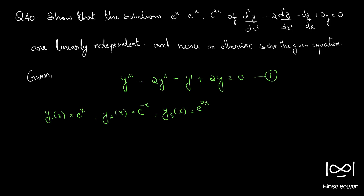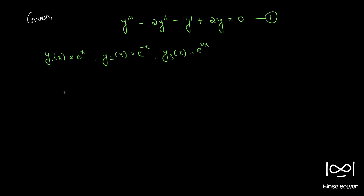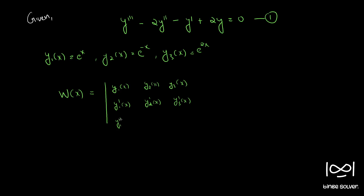We have to check whether they are linearly independent. We can use the concept of the Wronskian to check whether these solutions are linearly independent. The Wronskian is defined as the determinant with entries y1(x), y2(x), y3(x) in the first row, y1'(x), y2'(x), y3'(x) in the second row. If the Wronskian is not equal to 0 for some x in the defined interval, we can say that these solutions are linearly independent.